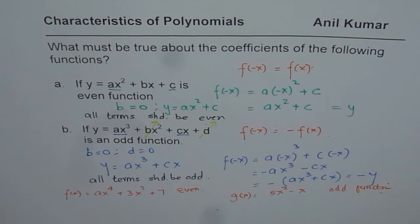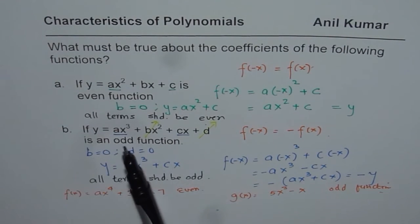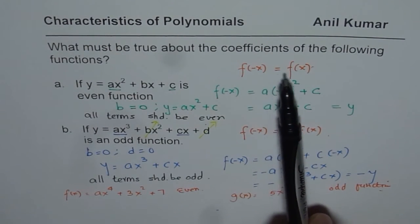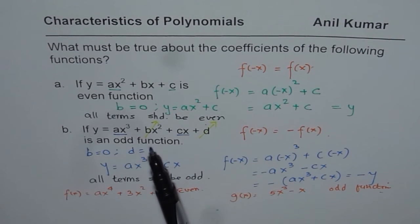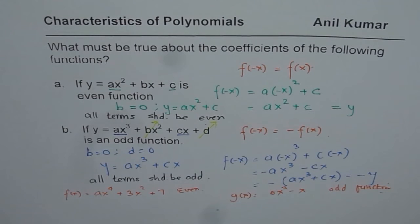It is important to note we are talking about even functions, not even degree. Odd functions, not odd degree functions. So there is a difference when we say even function, then f of minus x equals f of x, and odd function is f of minus x equals minus f of x. So that is how even and odd functions are related. I hope that helps. Thank you and all the best.